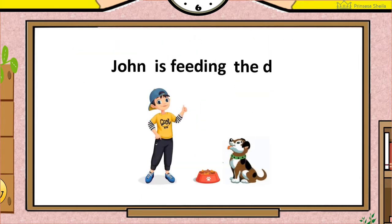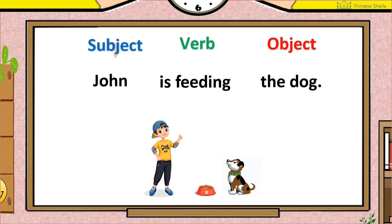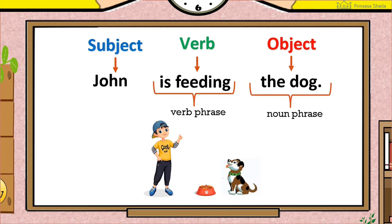Another example. John is feeding the dog. Who is John feeding? The dog. So John is the subject. This verb phrase is the action. And this noun phrase is the object because it is being acted upon. It is being fed, and it adds more details to the sentence.